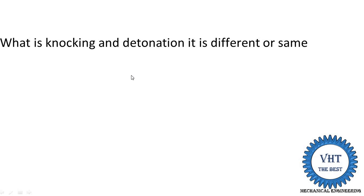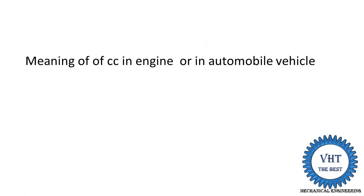Is knocking the same or different from detonation, and in which engines does it occur — SI engines or CI engines? Meaning of CC in engine or in automobile vehicles: CC means the combustion volume available inside the cylinders. For example, in a bike they say 120 CC engine — what is the meaning of 120 CC? In a car they say 799 CC. CC means centimeter cubes.